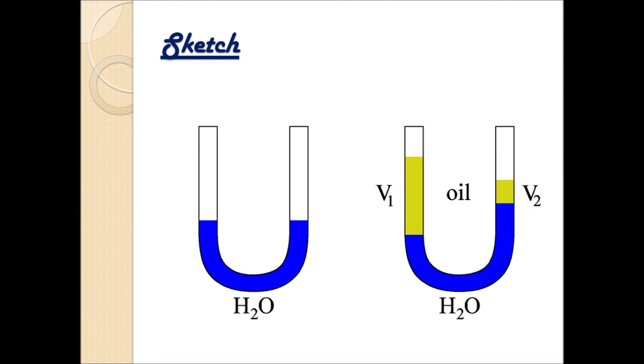Now we are going to add some oil. On the left-hand side, we are going to add the volume V1, and on the right-hand side V2. As a result, you can see that there are different levels now. How can we, from this, calculate the density of the oil?